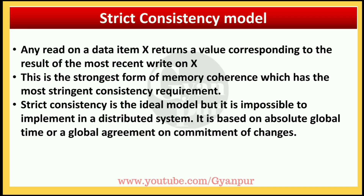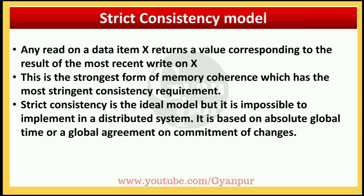The first model is strict consistency. Any read on a data item x returns a value corresponding to the result of the most recent write on x. If we have to read data item x, we return the most recent written value. If there are changes, we update them so we can read the updated data.